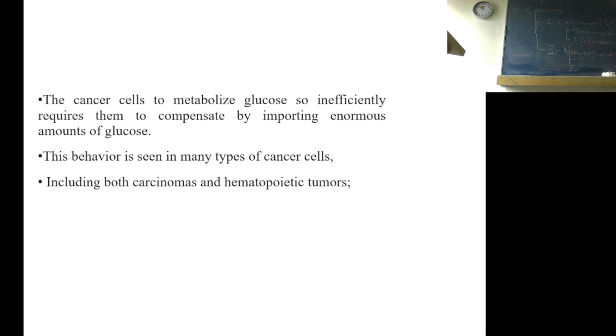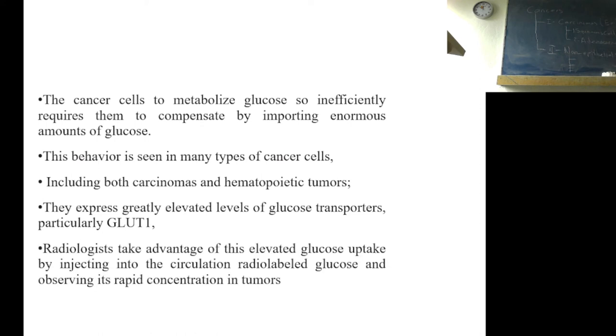This behavior is seen in many types of cancer cells, including more carcinomas and hematopoietic tumors. Cancer cells express greatly elevated levels of glucose transporter, particularly GLUT1. Radiologists take the advantage of this elevated glucose uptake by injecting into circulation radiolabeled glucose and observing its rapid concentration in tumors.